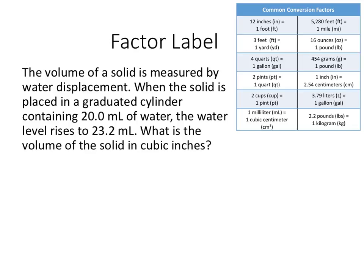Let's try another. So in this case, the volume of a solid is measured by water displacement. When the solid is placed in a graduated cylinder containing 20 milliliters of water, the water level rises to 23.2 milliliters. What's the volume of the solid in cubic inches? So first of all, what's the volume of the solid in milliliters? 23.2 milliliters minus 20, which is just the water, gives me 3.2.